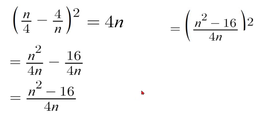We have (n² - 16)/4n, the whole thing is squared. If we apply exponent properties: (a/b)^c is the same thing as a^c/b^c.